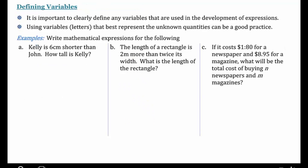Now in the previous examples, the number was defined for us. The variable was defined for us. It said, let the number be n. Now that may not always be the case. It's important to clearly define any variables that are used in the development of expressions. And we do that by using letters to represent our variables. And it makes sense to try and use something that represents the variable well. So for example, if we're looking at number, use n for number.